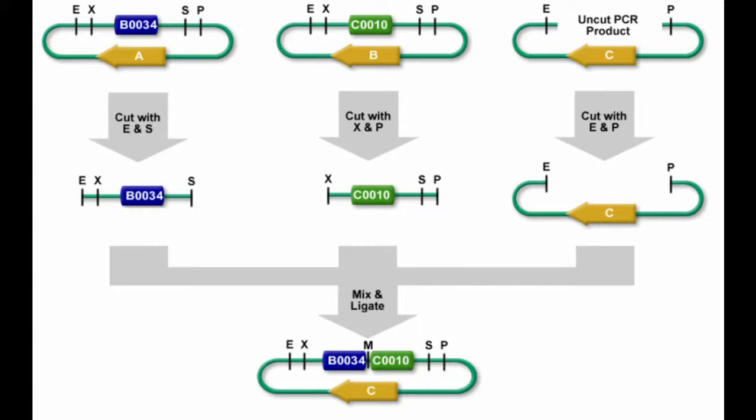Each biobrick part consists of five main parts: the restriction enzyme prefix and suffix, the part of interest, an antibiotic resistance gene, and a vector that holds it all together.